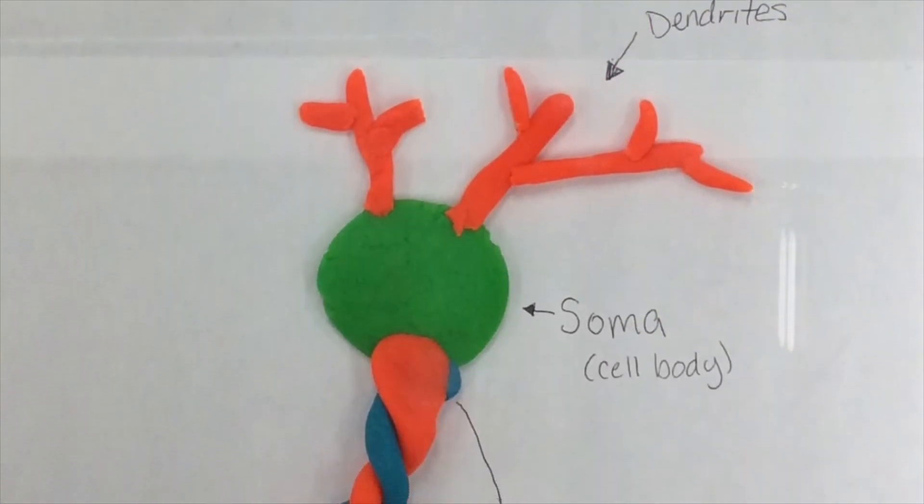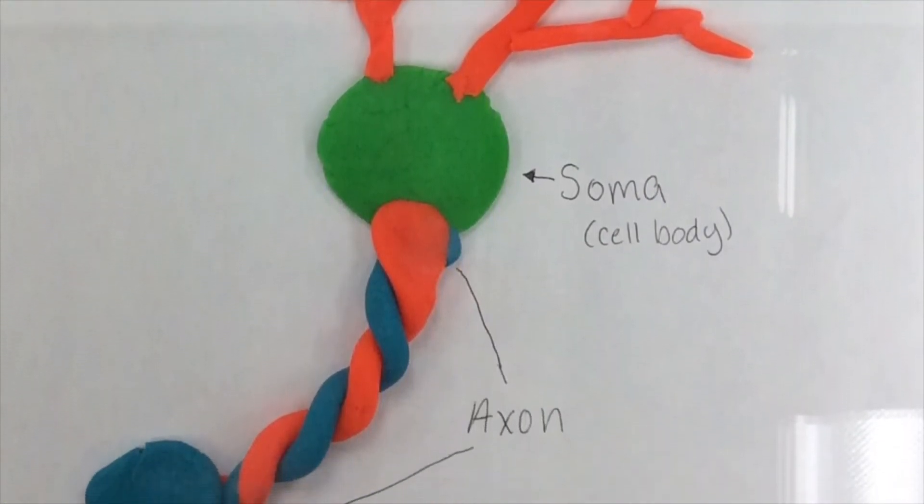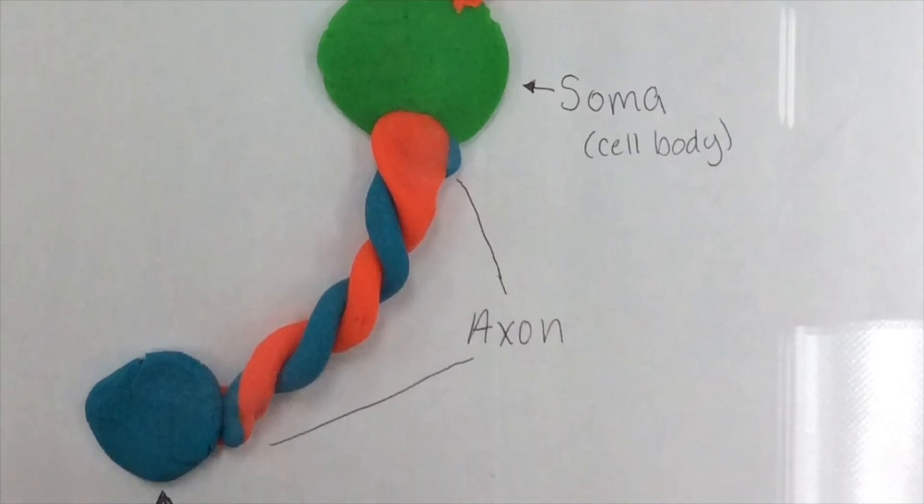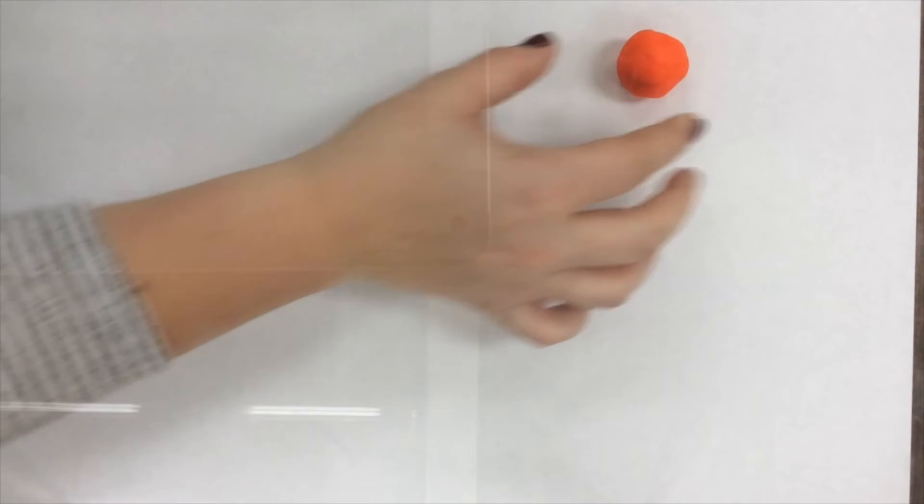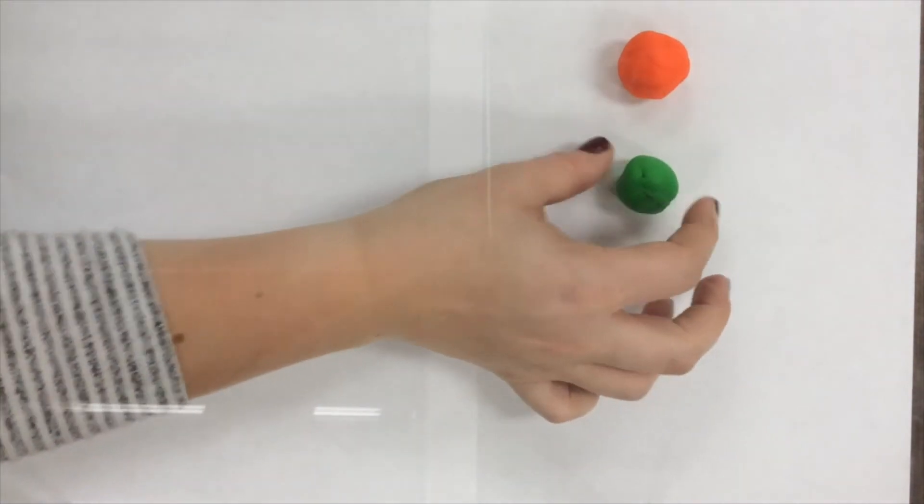Now that we've learned about neurons, let's build our own. Now is when you will need your four different colors of play-doh. If you're like me and can only find three colors, that's fine as well. I'll show you how to adjust for just three colors of play-doh.